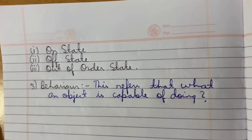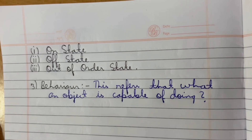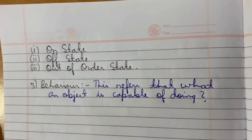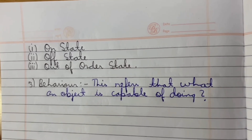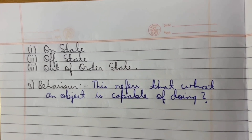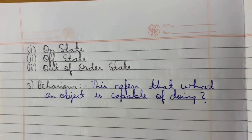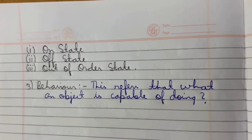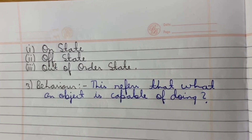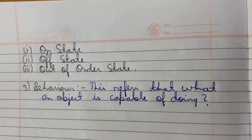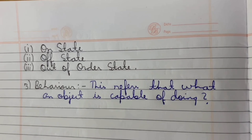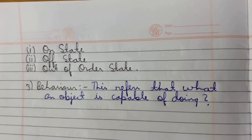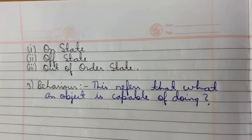The computer can be in an on state, an off state, or an out of order state — meaning the computer is not working properly. The third characteristic is behavior. Behavior refers to what an object is capable of doing.